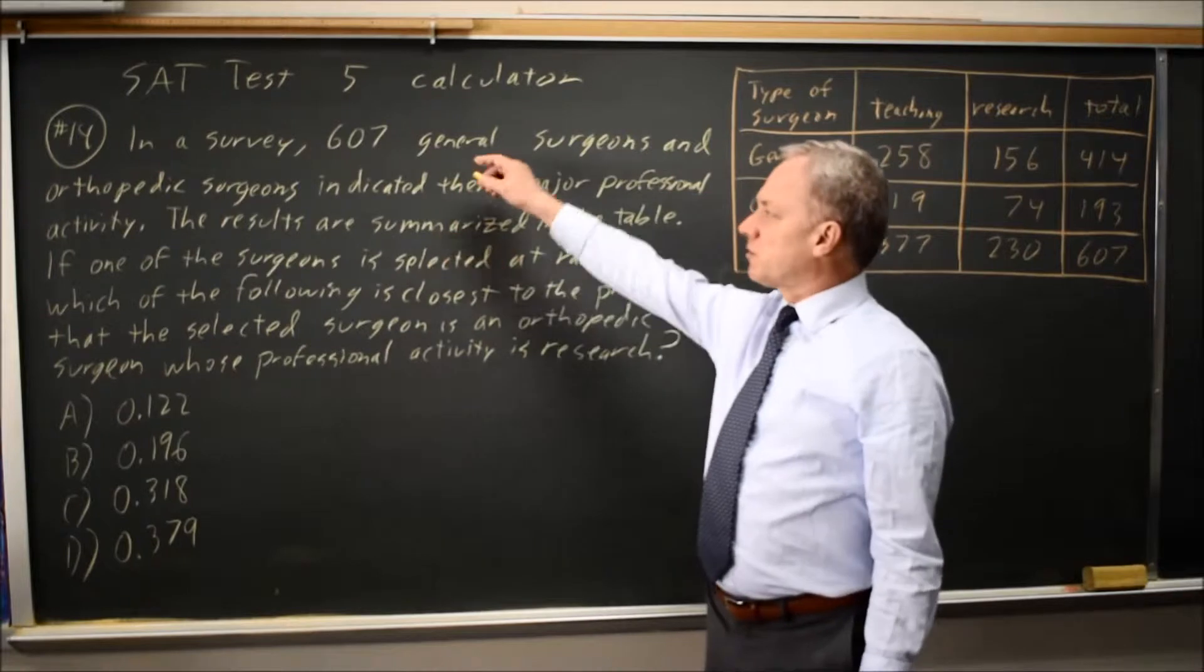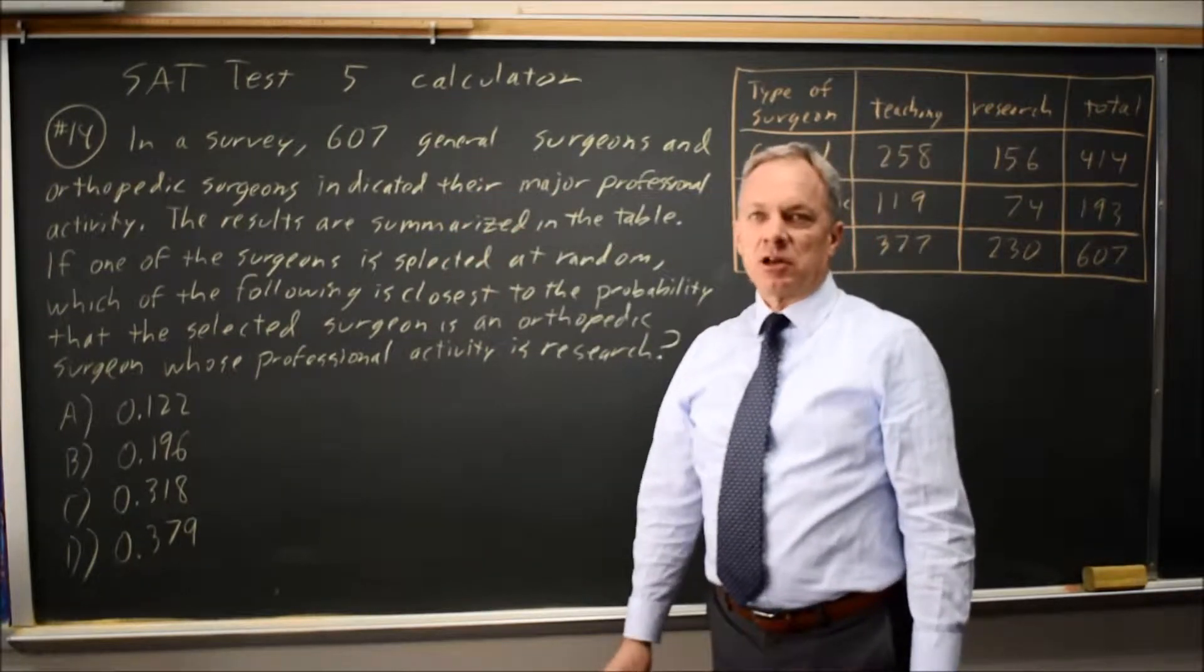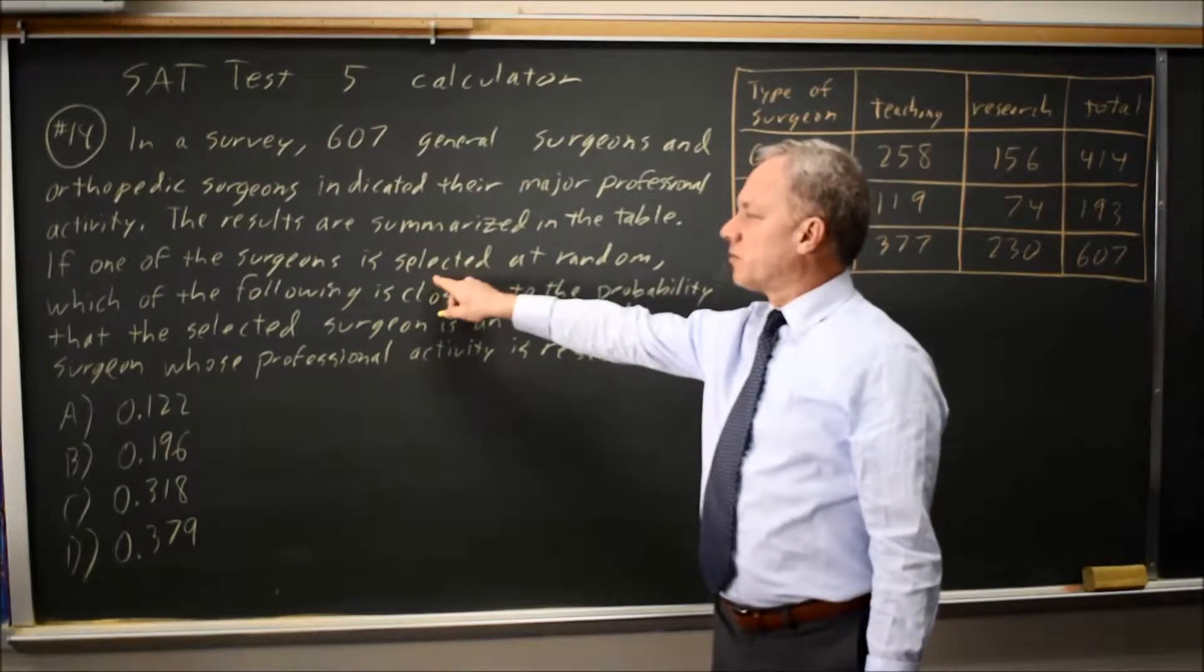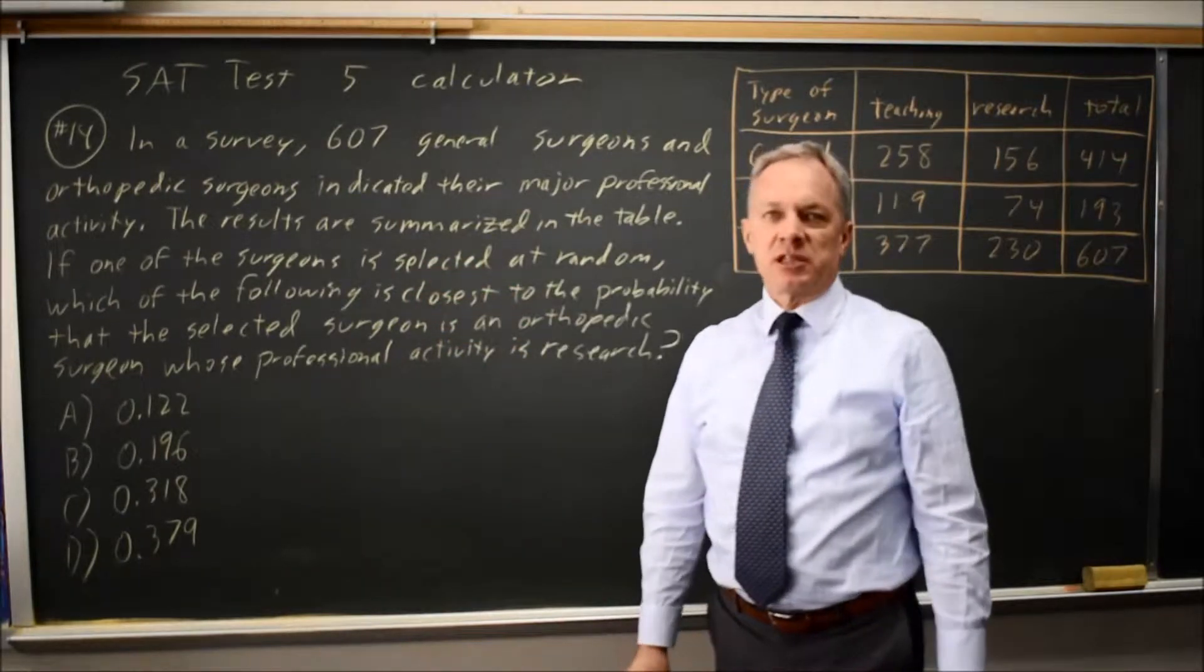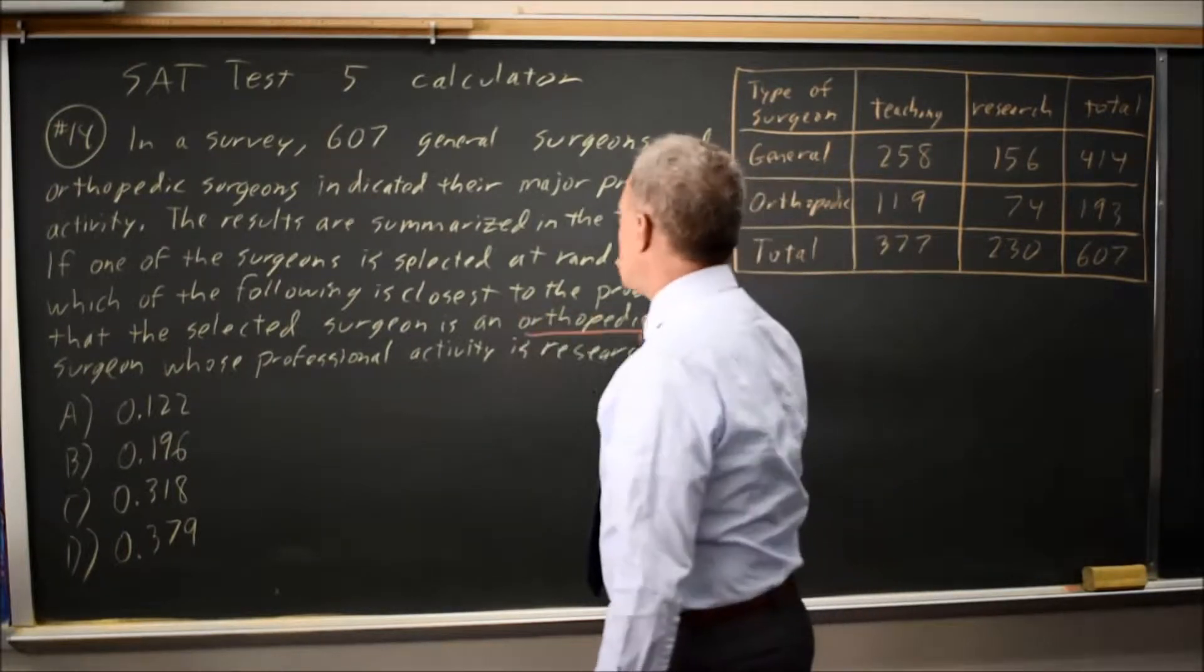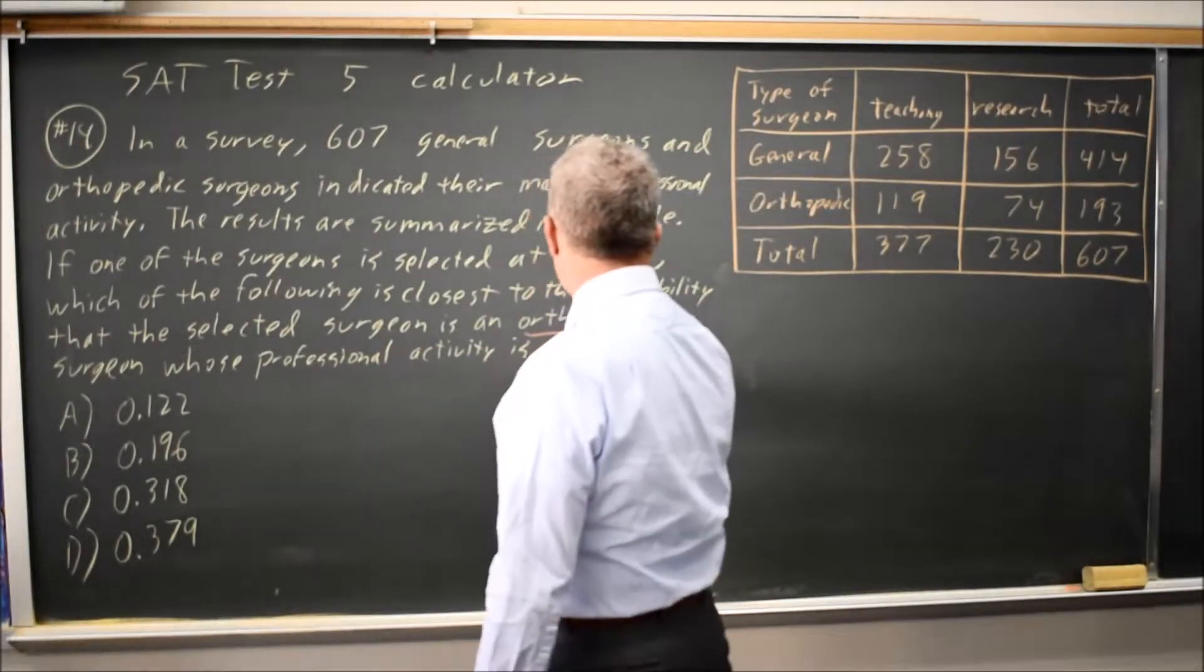We have a survey of general surgeons and orthopedic surgeons on their major professional activity. If one of the surgeons is selected at random, which is closest to the probability that the selected surgeon is an orthopedic surgeon whose professional activity is research?